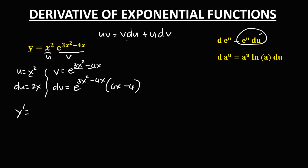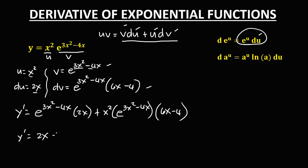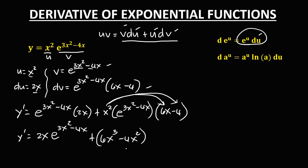To find the derivative using the product rule formula, we have v times the derivative of u: e to the power 3x squared minus 4x, times 2x, plus u times the derivative of v: x squared times e to the power 3x squared minus 4x, times 6x minus 4. Simplifying, we get 2x times e to the power 3x squared minus 4x, plus distributing x squared gives 6x cubed minus 4x squared, times e to the power 3x squared minus 4x. So this is now the derivative.